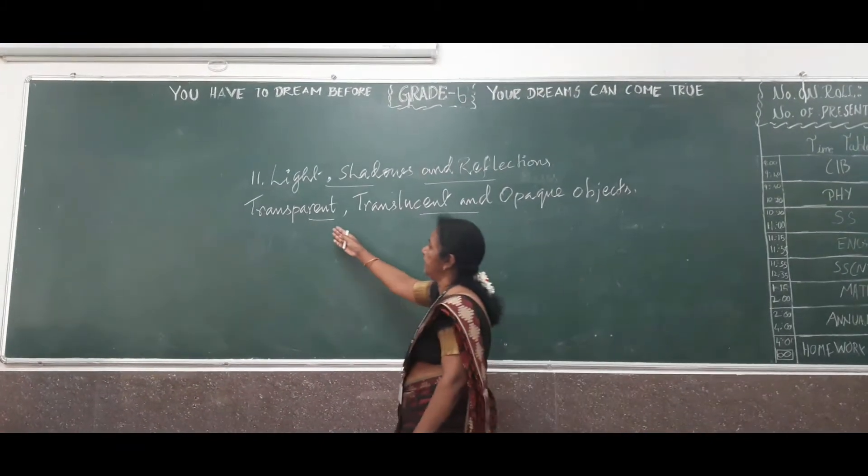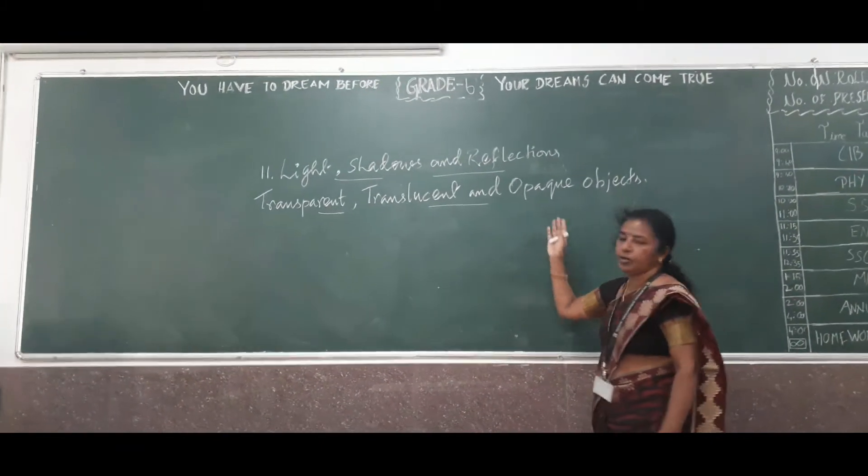Namely, that is divided into three types: transparent, translucent, and opaque objects.